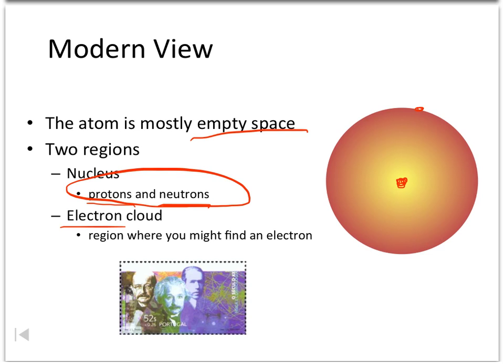You have to imagine this three-dimensional atom. Right now, you're seeing it as two dimensions, but these electrons are flying around the outside of the nucleus.